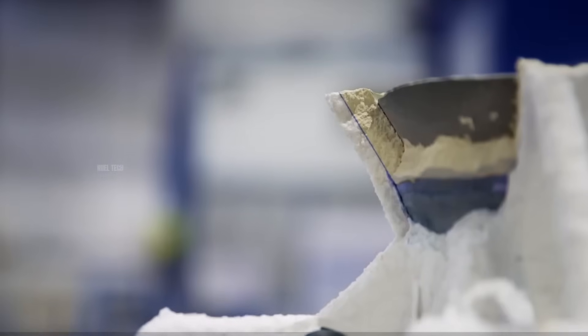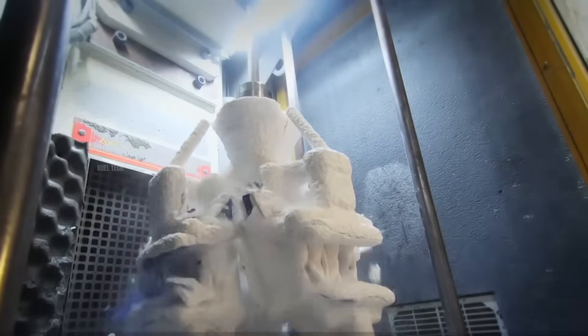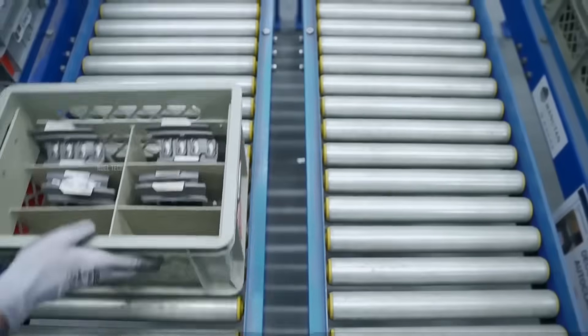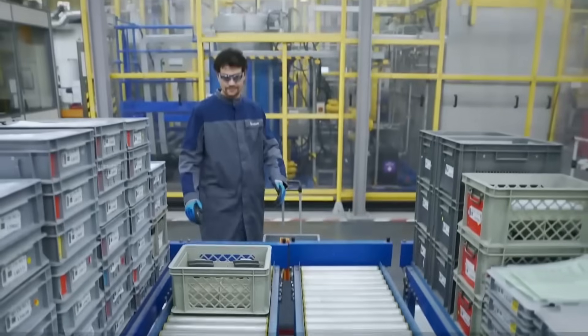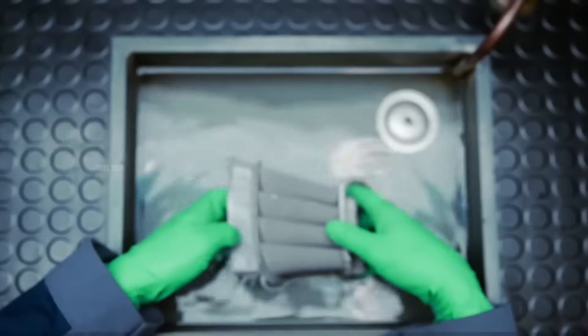Once solidified, the ceramic shell is broken off using vibration. The blades are cut from the cluster and the surfaces are smoothed. However, the ceramic core still remains inside the blade and must be removed. This is done by dissolving the core with a special soda-based solution.